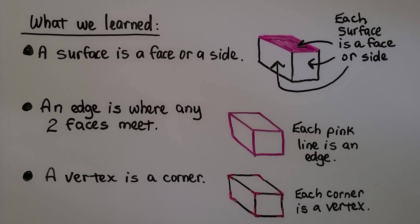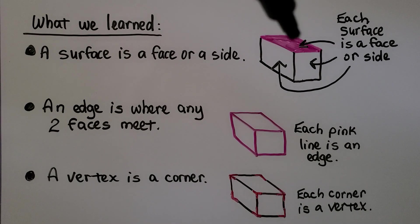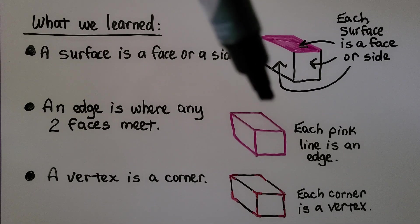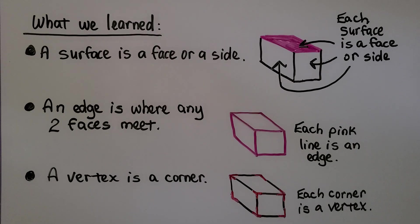So here's what we've learned. A surface is a face or a side. Each surface is a face or a side. An edge is where any two faces meet. So where this top face meets the side face, this is an edge. Each pink line is an edge. A vertex is a corner. So each corner is a vertex. So this rectangular prism has eight vertices.